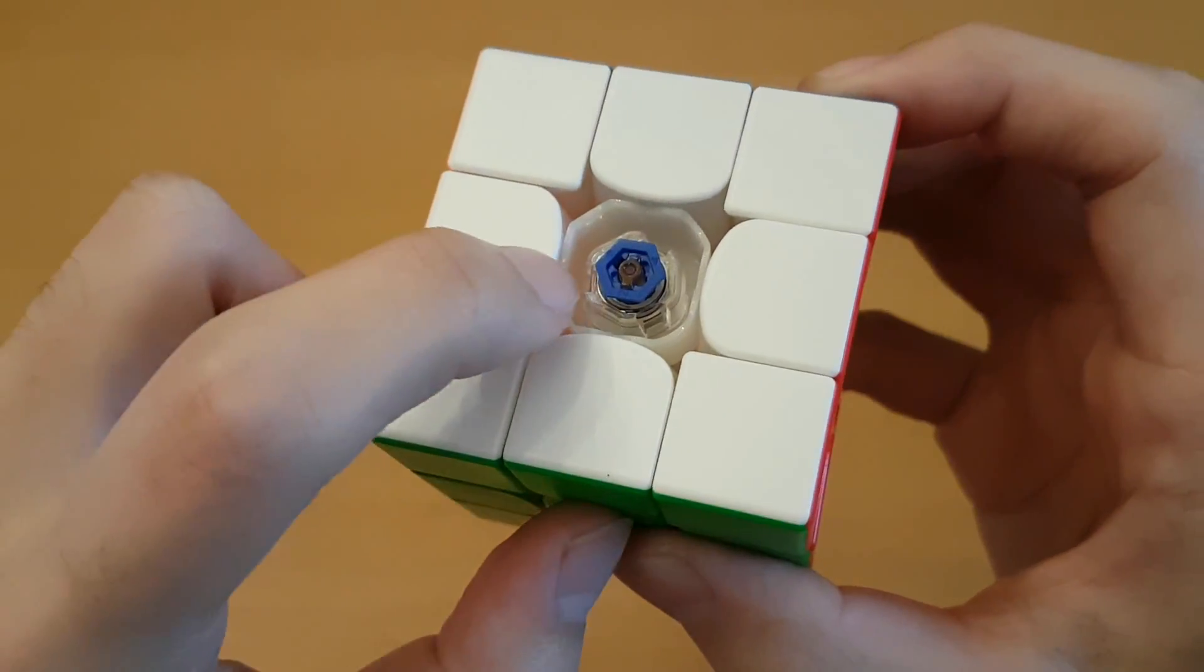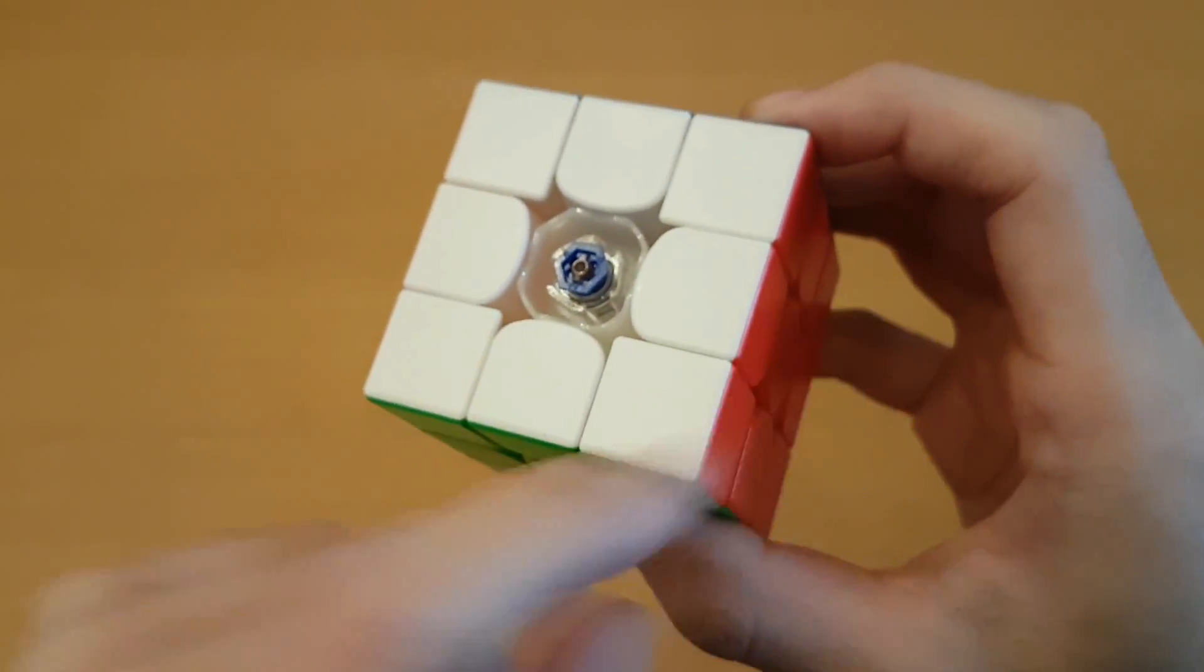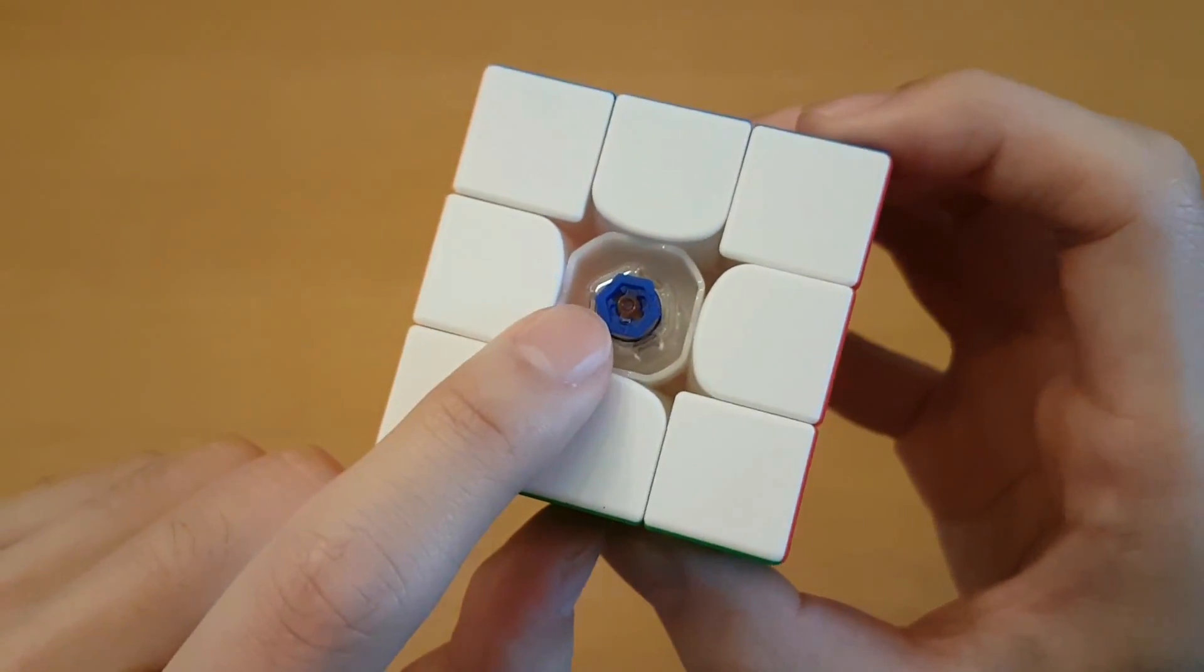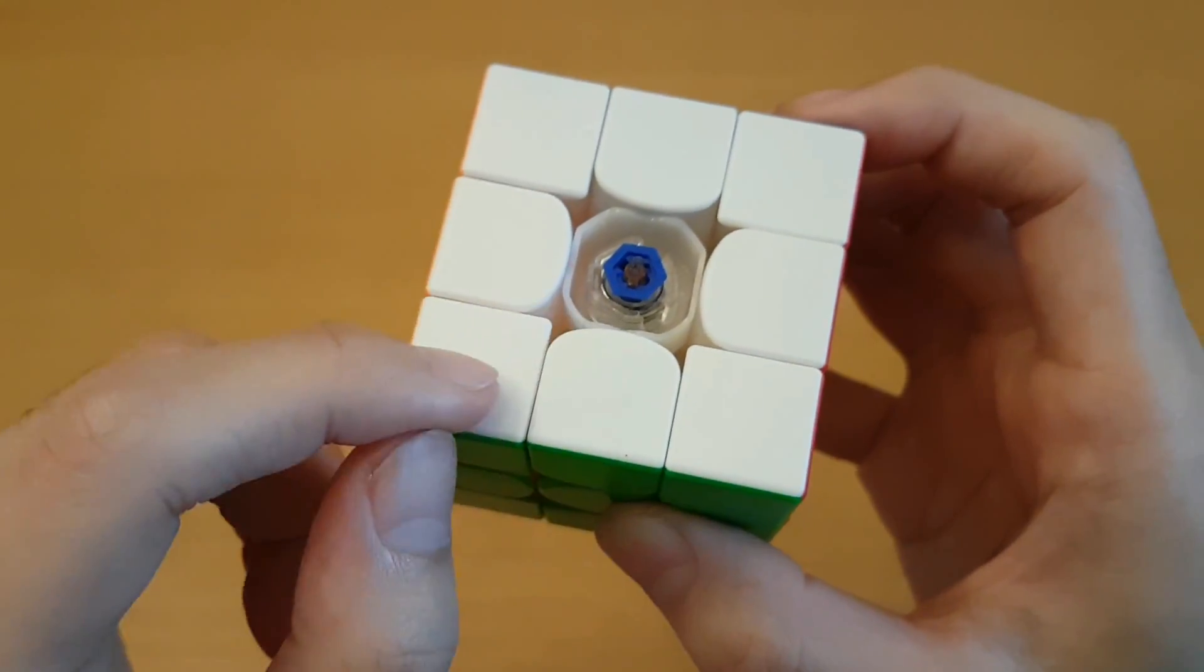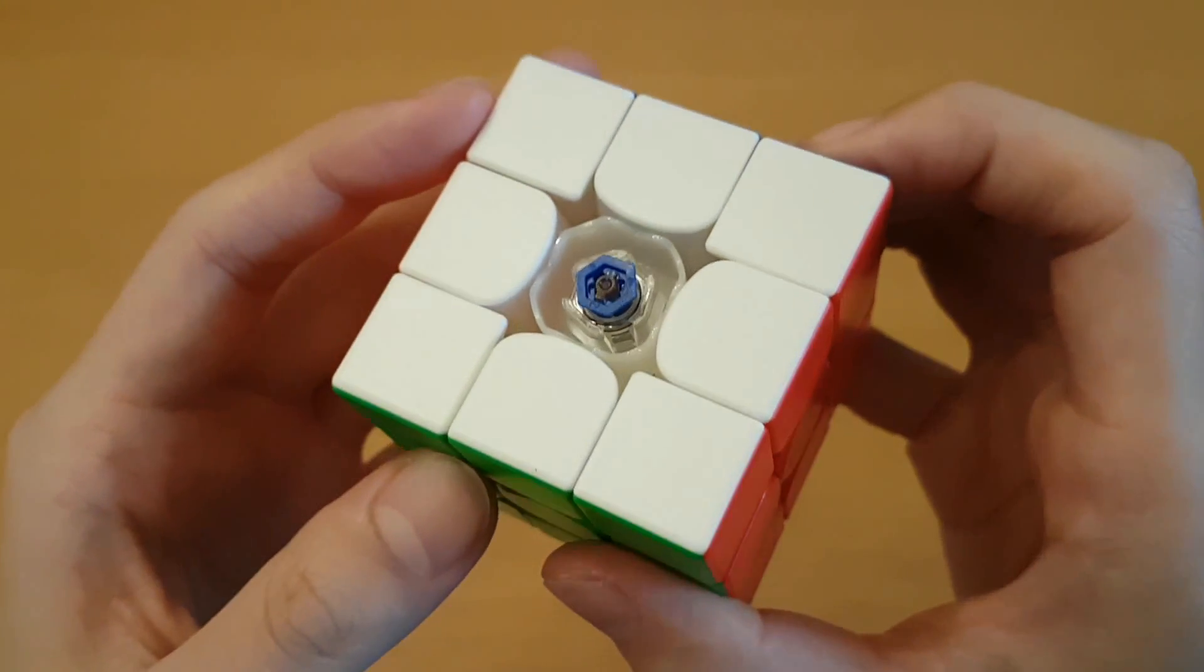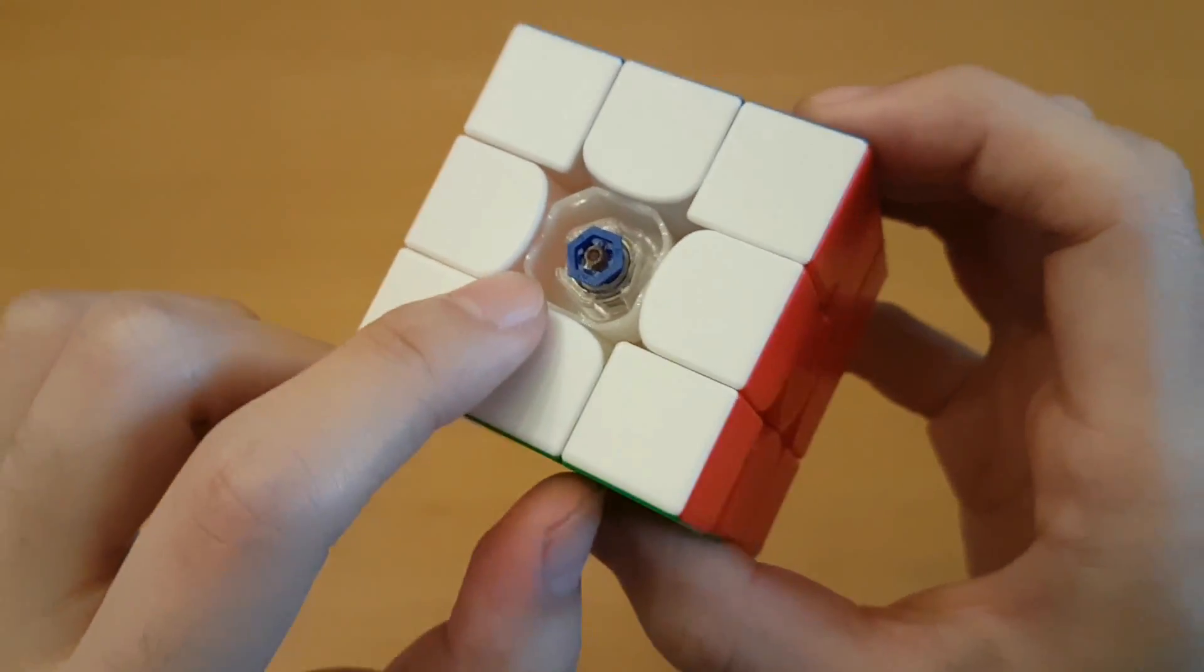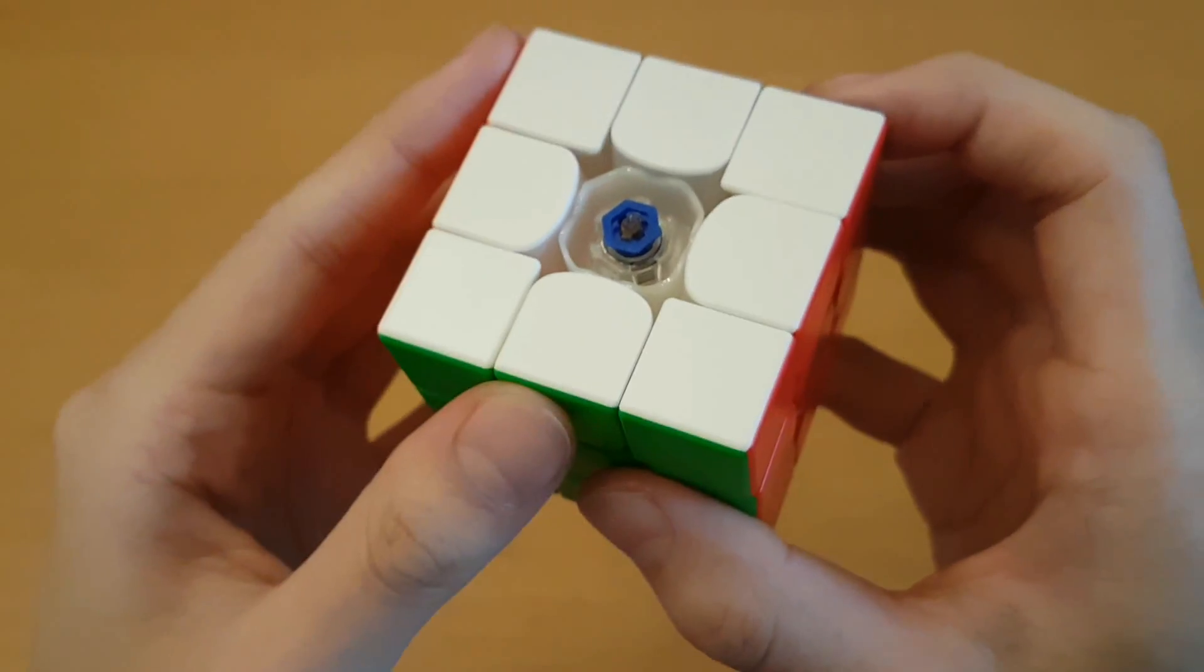Then inside the core, here's the centerpiece travel and the spring compression. I talked about this in the GAN XS video, so this looks the same and I won't talk about it again here, but I will explain it in the review for anyone who's wondering. But basically, this gives you a ton of control over how your cube feels, whether it's speed or corner cutting.